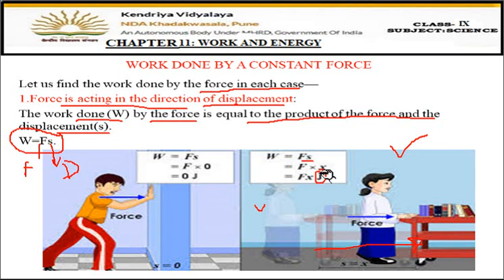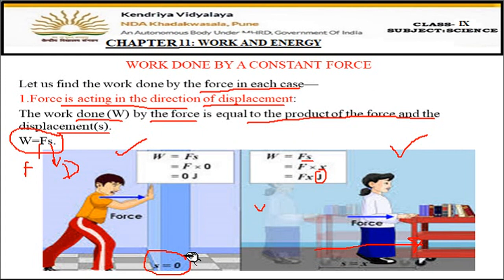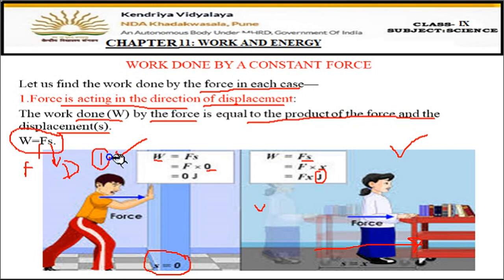The unit of work is Joule, which will be discussed later. In picture one, a boy is applying force on a box but S = 0, meaning there is no displacement. So work done = F × 0 = 0. No work is done. In the second picture, the girl pushes the table and displacement is in the same direction as force, so work done = F × S — positive work is done.